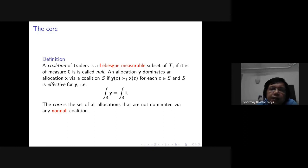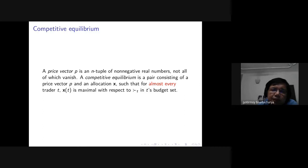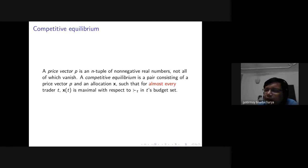A competitive equilibrium is a price vector and allocation such that the allocation is maximal in the budget set for almost every agent t — meaning every agent except possibly a set of measure zero. If the allocation is not a best bundle for a null set of agents, that is not a problem. We have weakened both the core definition and the competitive equilibrium definition: exceptions are allowed as long as the set of agents for which the exception happens has measure zero.